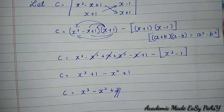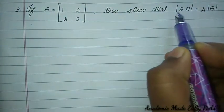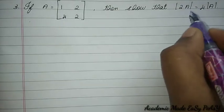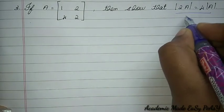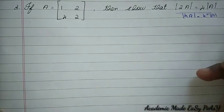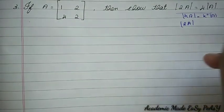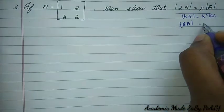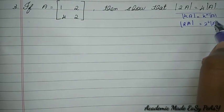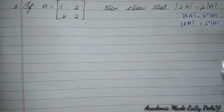Question 3: given matrix A, show that det(2A) = 4 · det(A). We already know the formula: det(kA) = k^n · det(A). Since this is a 2×2 matrix and k = 2, we have 2² · det(A) = 4 · det(A). But we still need to show it explicitly.